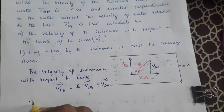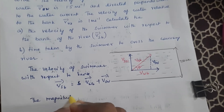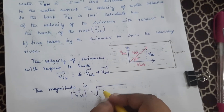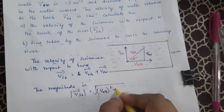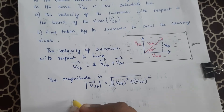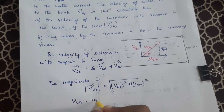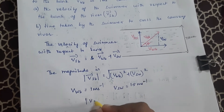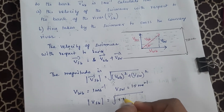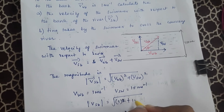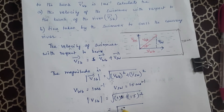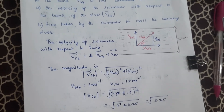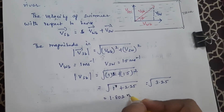The magnitude of V_SB is given by the square root formula. V_WB is 1 meter per second and V_SW is 1.5 meters per second. So V_SB = √(1² + 1.5²) = √(1 + 2.25) = √3.25, which equals 1.802 meters per second.